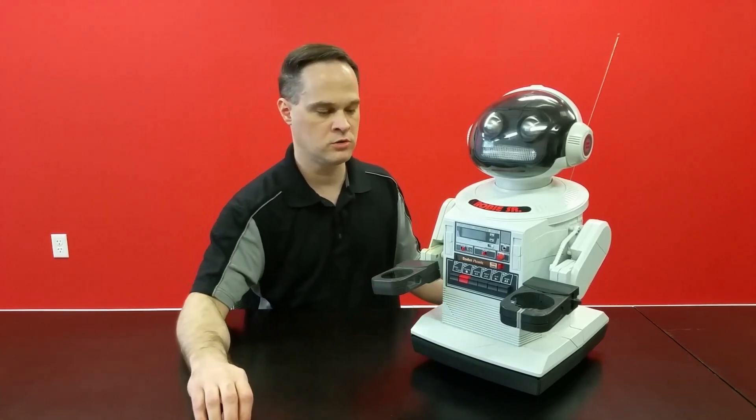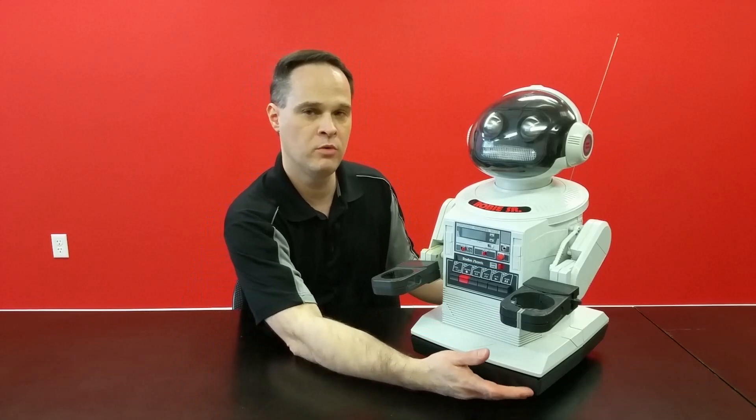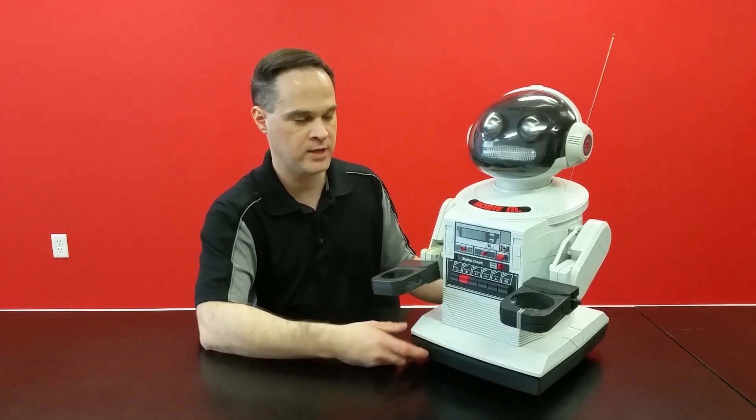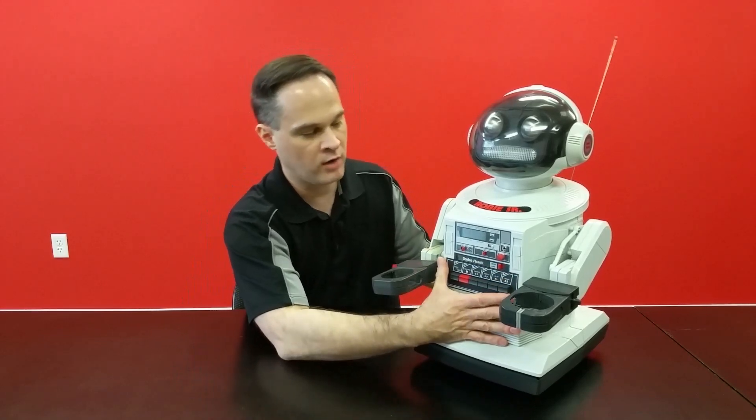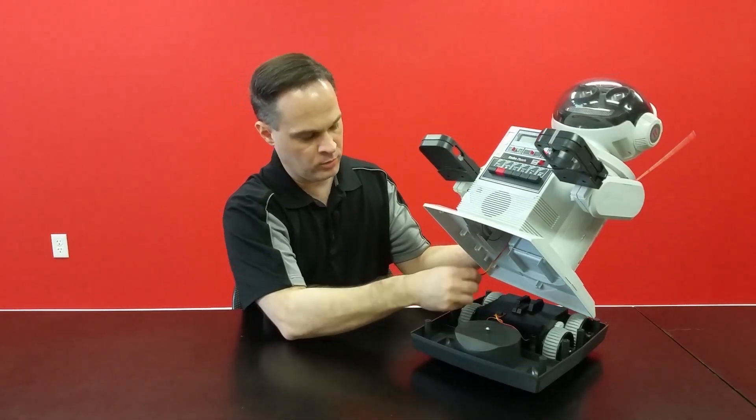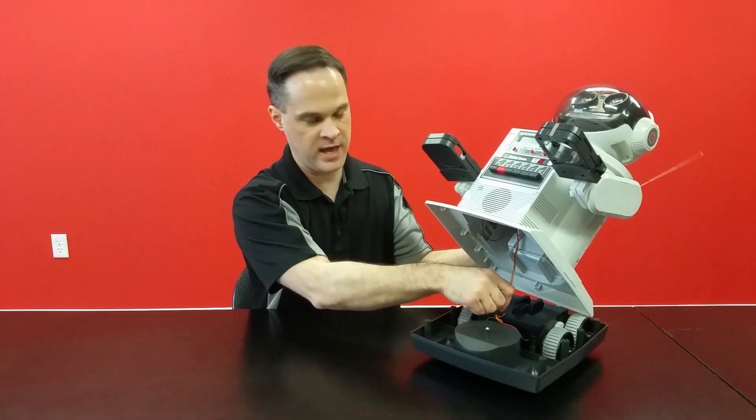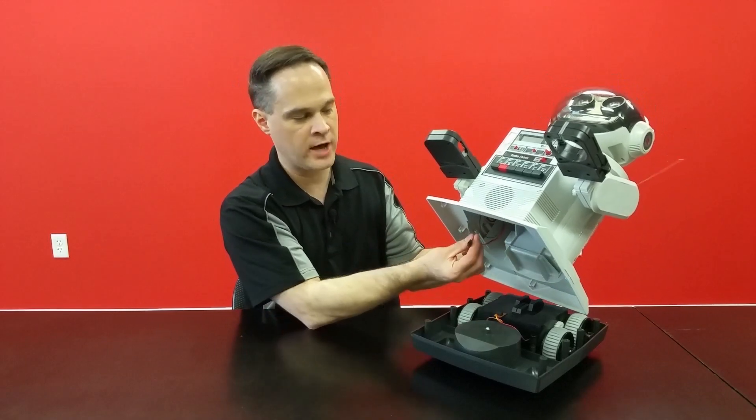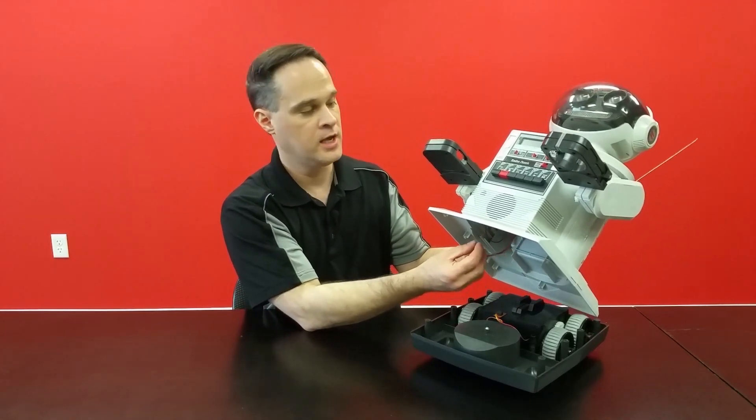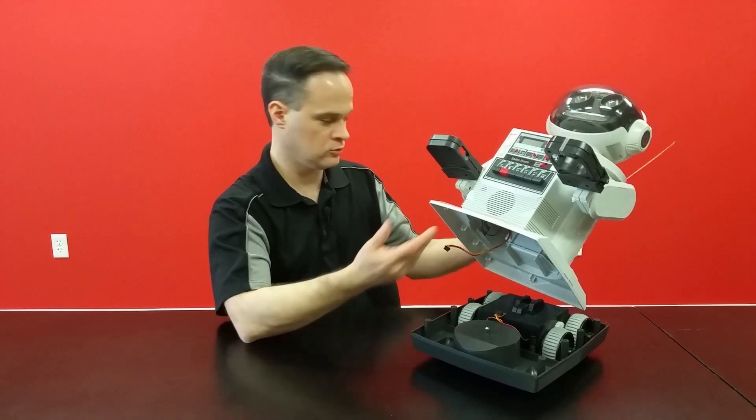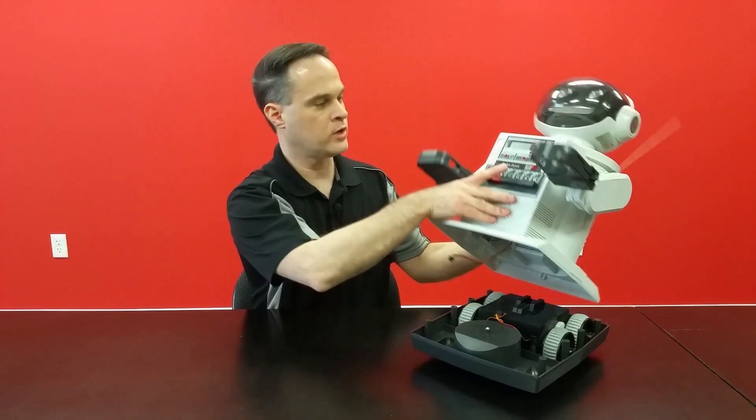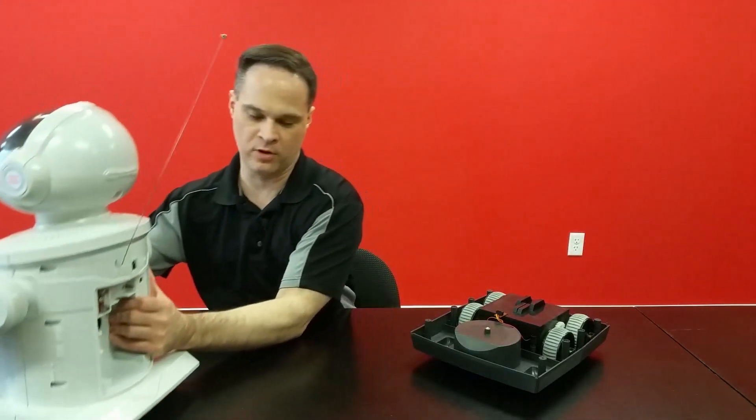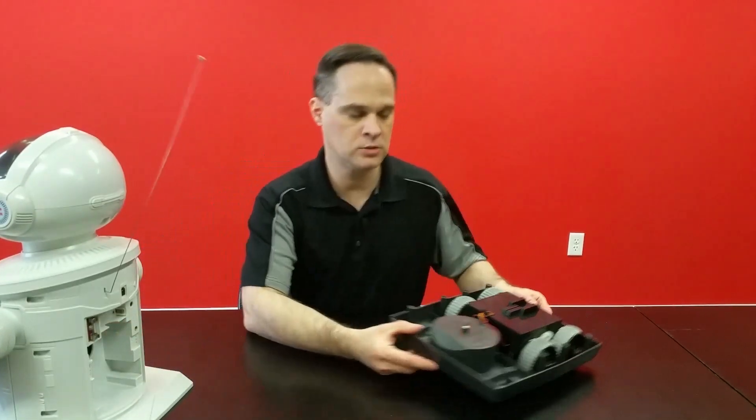I've already taken most of the screws out. The first step would be to remove the eight screws from the bottom of the base so that we can lift the body off. When we do that, there will be a wire attached to the base and all of these unplug just by pulling them out. They're not hard soldered because they're designed to be interchangeable and serviceable.